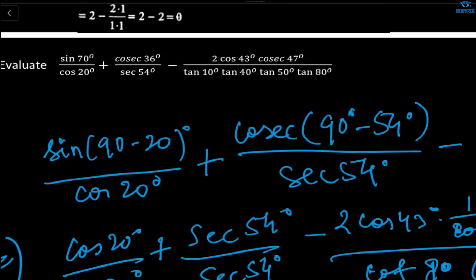If you change either the cos value or the sec value, you still get the same answer. You don't have to change both at the same time — change just one. If you change both sine and cos, the result will ultimately be the same, just reciprocal.